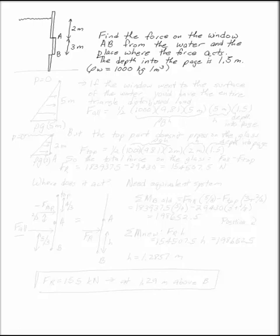Find the force on the window AB from the water and the place where that force acts. The depth into the page is 1.5 meters, and the density of water is 1,000 kilograms per meter cubed.